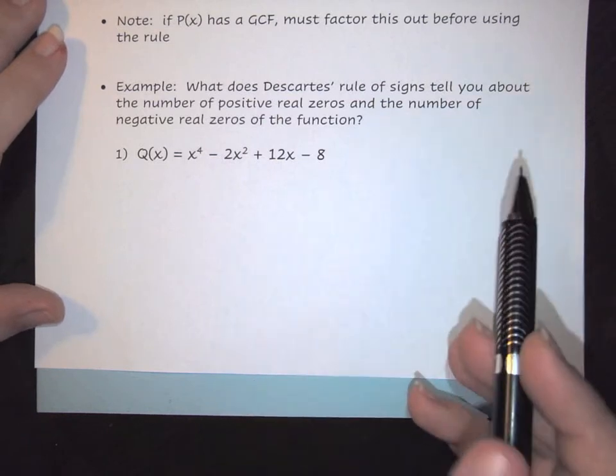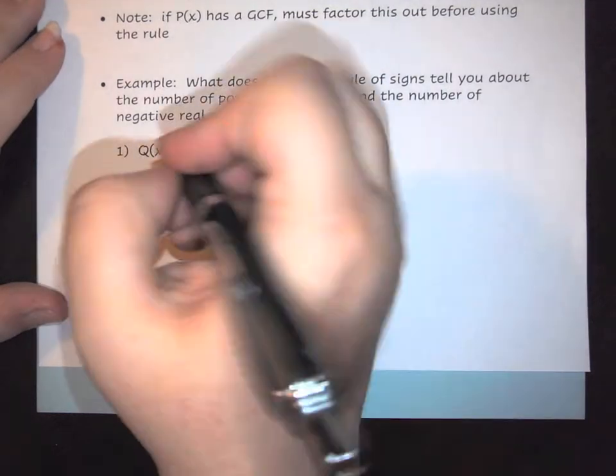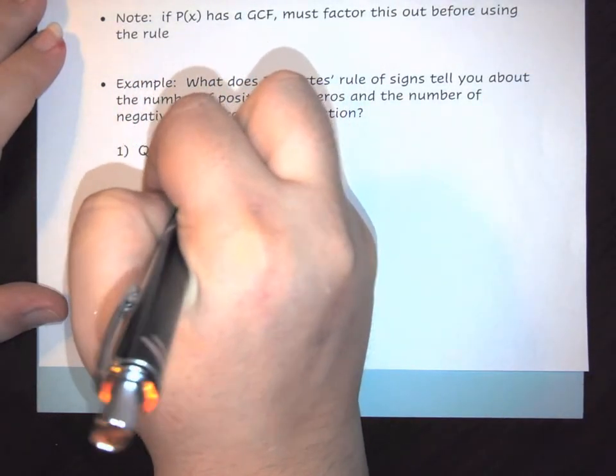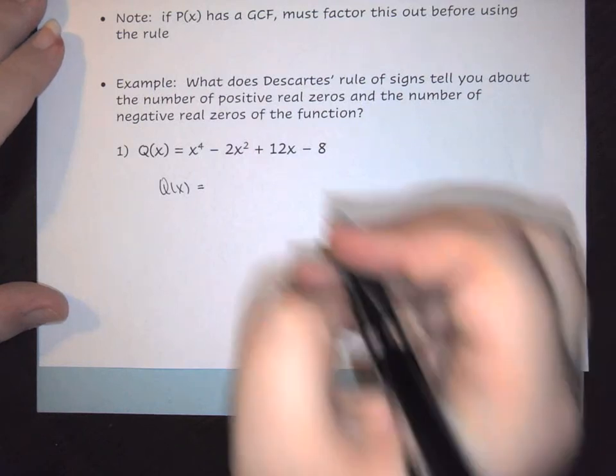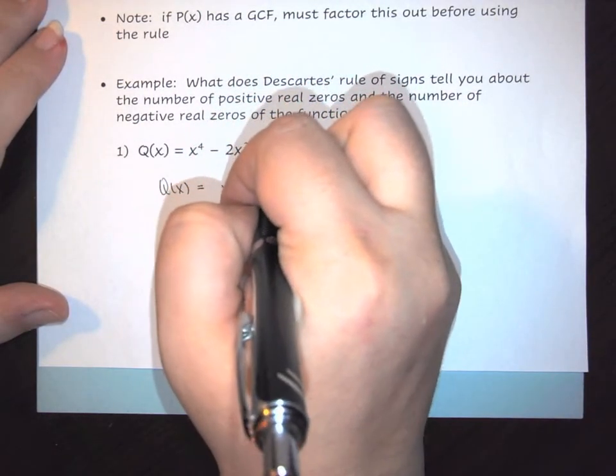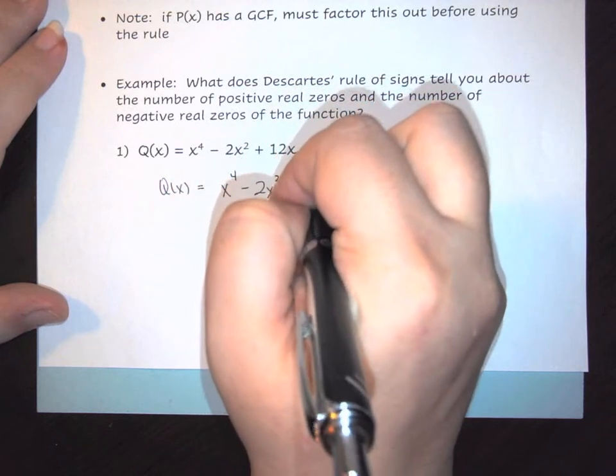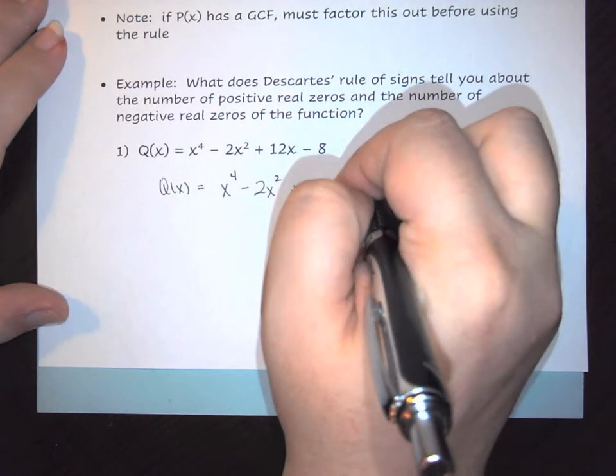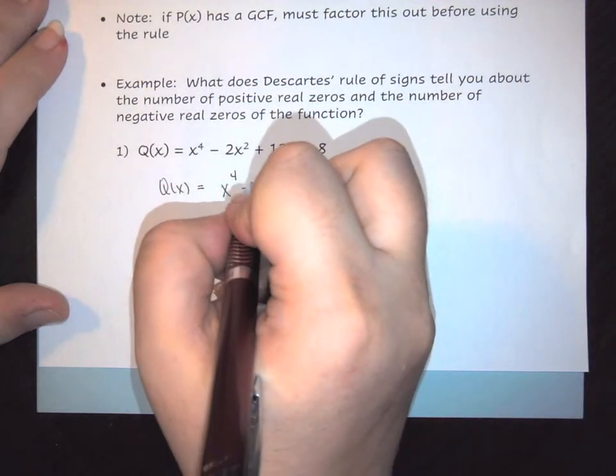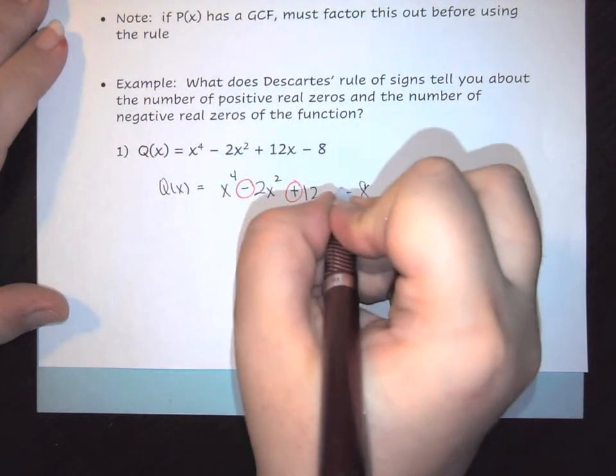Let's take a look at it. We have Q(x) = x⁴ - 2x² + 12x - 8. We're going to look at the signs, and we have sign changes here, here, and here.